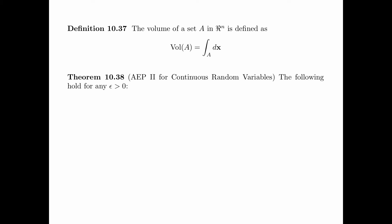Theorem 10.38, which is the AEP2 for continuous random variables, says that the following hold for any epsilon greater than zero. First, if a sequence x is epsilon typical, then the probability density function of x is very close to 2 to the power minus n times the differential entropy of x.